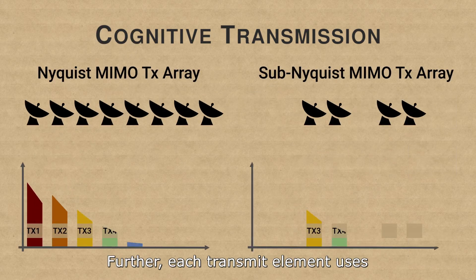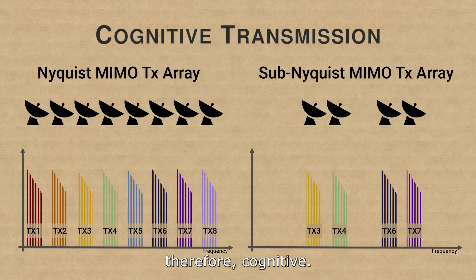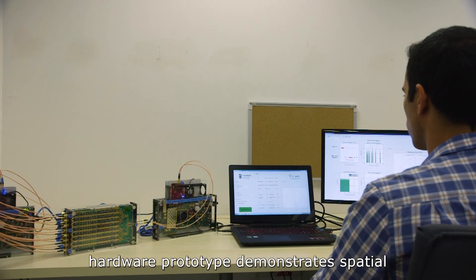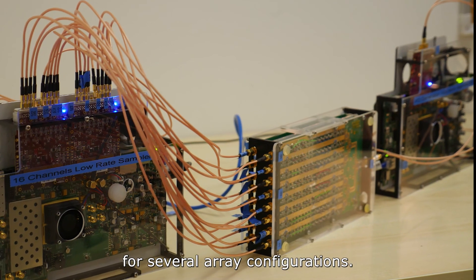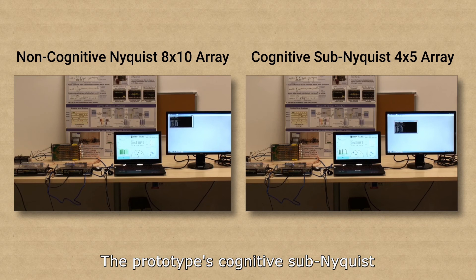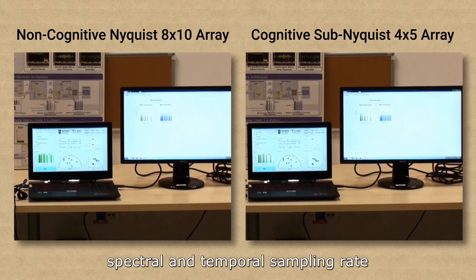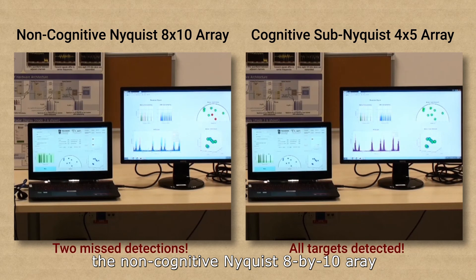Further, each transmit element uses only a few narrow sub-bands and is therefore cognitive. Our cognitive sub-Nyquist MIMO hardware prototype demonstrates spatial and temporal sub-Nyquist sampling for several array configurations. The prototype's cognitive sub-Nyquist 4x5 MIMO array reduces the combined spectral and temporal sampling rate by 87.5% and performs better than the non-cognitive Nyquist 8x10 array for a given target scenario.